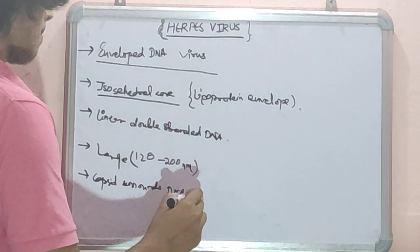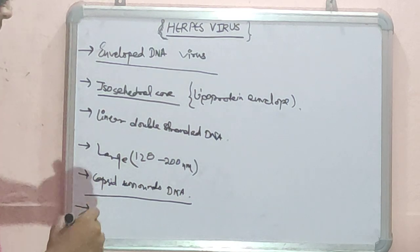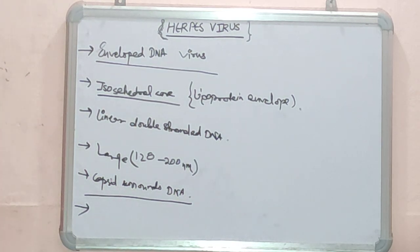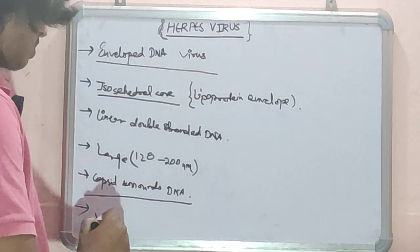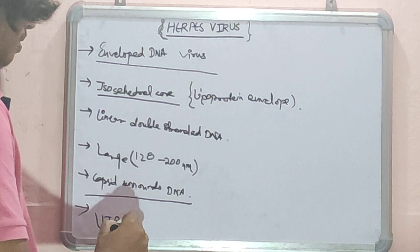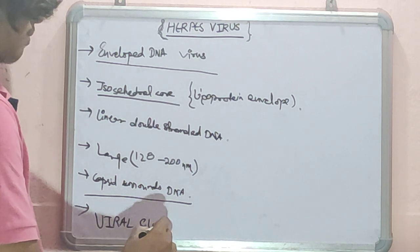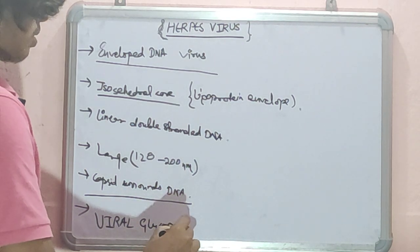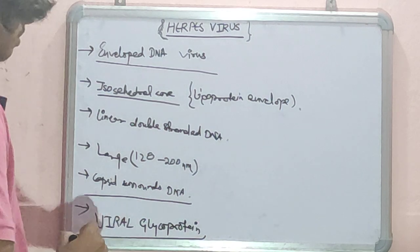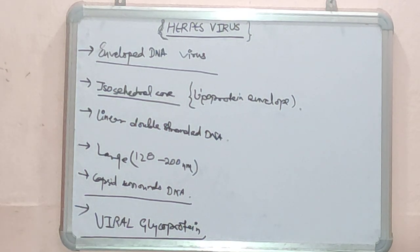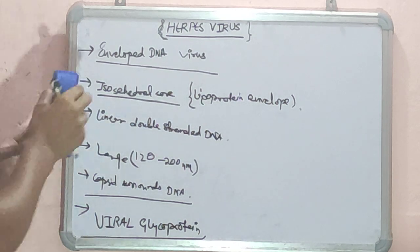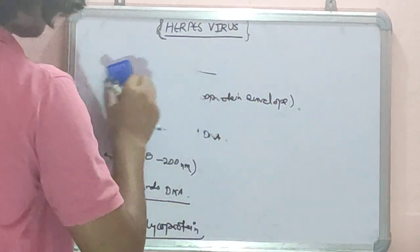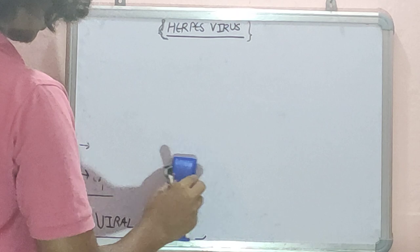Next is a nuclear membrane-derived lipid bilayer containing viral glycoproteins. So the lipid layer consists of viral glycoproteins, which is very important to understand. This is some of the basic information you need to know about Herpes Viruses.